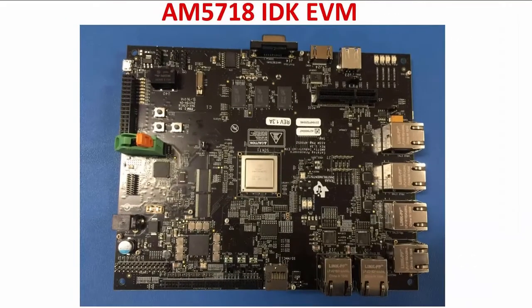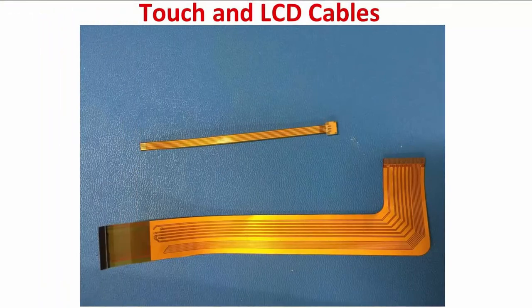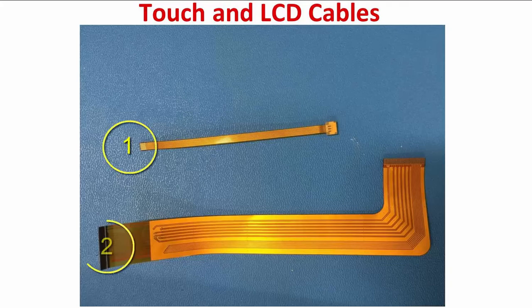I will be using the AM5718 IDK board to show the correct way of connecting the touch and LCD cables. If you are working with the AM5728 IDK EVM, the steps shown are identical for the AM5728 board. These are two ribbon cables that were included with your LCD kit. The smaller cable is the touch cable and the larger one is the LCD cable. Now we are going to connect the cables in the sequence shown here.